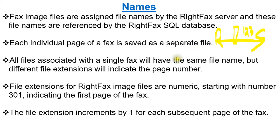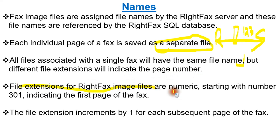Each individual page of a fax is saved as a separate file. All files associated with a single fax will have the same file name but different file extensions that indicate the page number. The extension is numeric starting with .301 for the first page, and increments by one for each subsequent page of the fax.